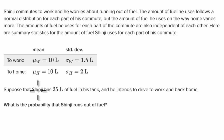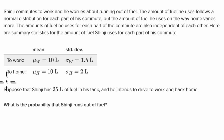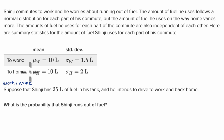We have the distributions for the amount of fuel he uses to work and to home, and they follow normal distributions. But here we're talking about the total amount of fuel he uses to go to work and go home. So what we want to do is come up with a total distribution for the round trip — work plus home.